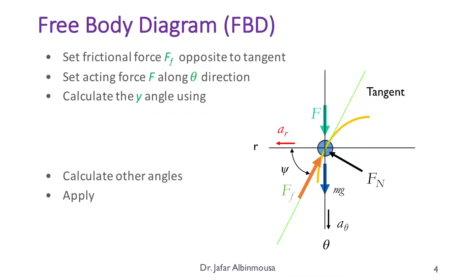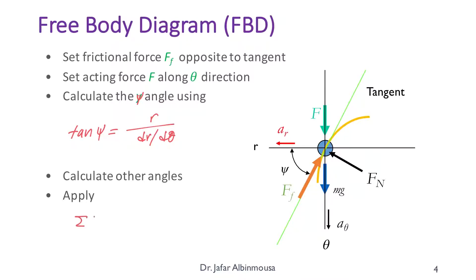To summarize: the frictional force is set opposite to the tangent, the acting force from the stick is along the radial direction (horizontal), so the force acts perpendicular to it. We can calculate the psi angle using tan(psi) = r divided by dr/d_theta. We can then calculate other angles and apply the equations.